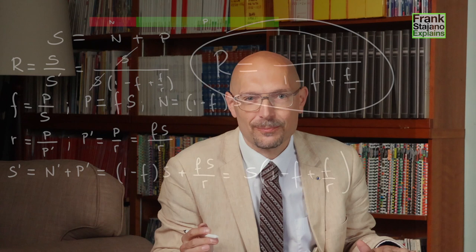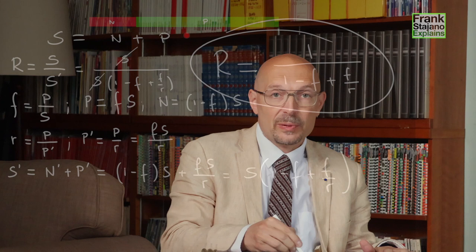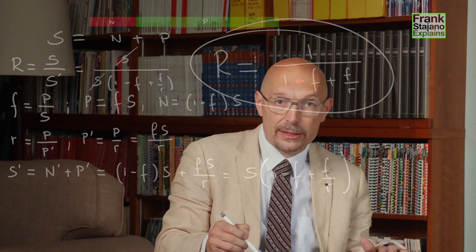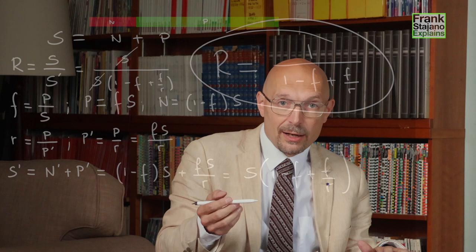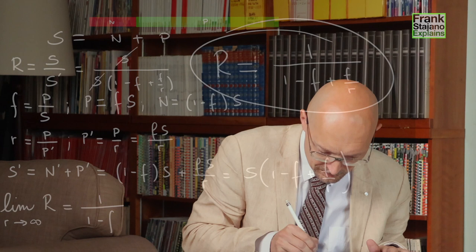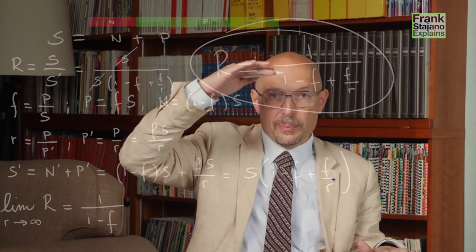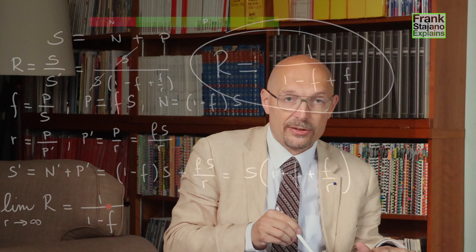Now, if we greatly improve the improvable part p, meaning if we make the small r very large, then this f over r over here will become very small until its contribution to this denominator becomes negligible. And as mathematicians would say, the limit of big R for r going to infinity is 1 over 1 minus f. And this quantity is always larger than this one because it has a smaller denominator. And this means that this limit here is an upper bound. No matter how much I speed up p by, I will never get a speed up greater than this asymptote, horizontal asymptote for R, for big R.